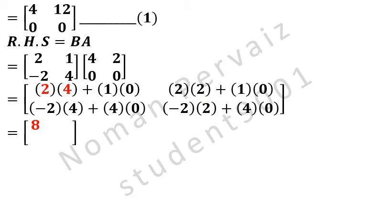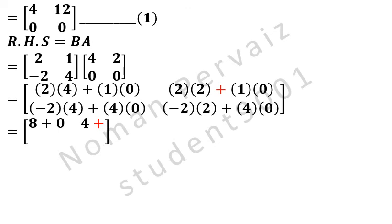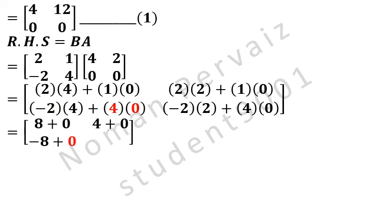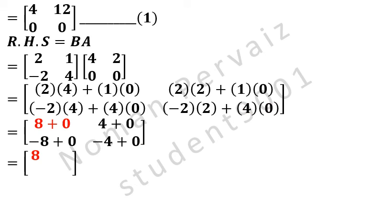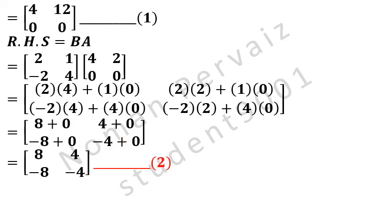Is equal to: 2×4 = 8, plus, 1×0 = 0; 2×2 = 4, plus, 1×0 = 0; minus 2×4 = minus 8, plus, 4×0 = 0; minus 2×2 = minus 4, plus, 4×0 = 0. Is equal to: 8 plus 0 is 8, 4 plus 0 is 4, minus 8 plus 0 is minus 8, minus 4 plus 0 is minus 4. We call this equation number 2.